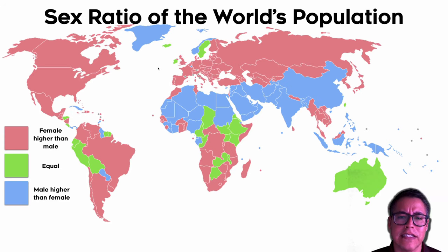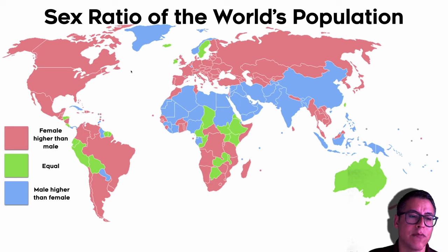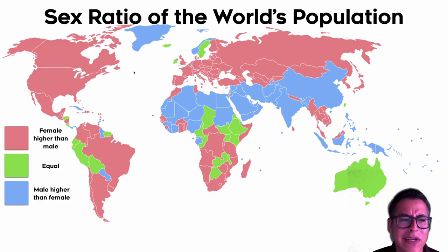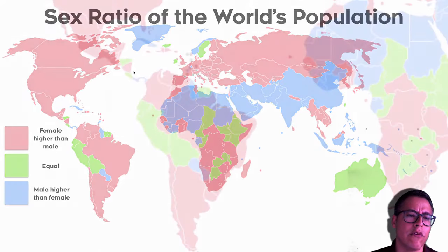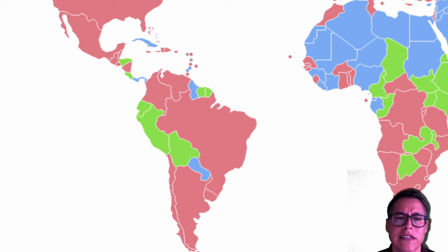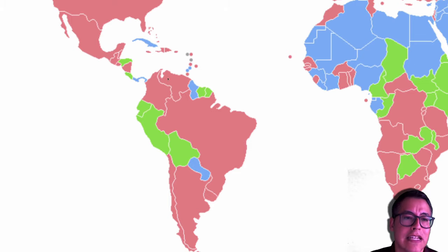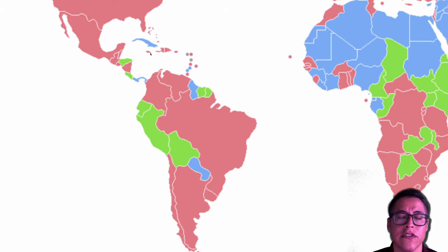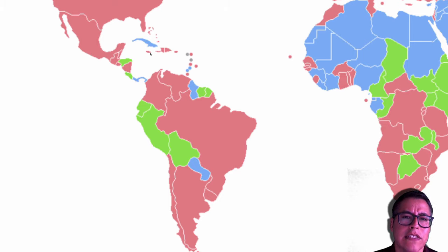When we look at the world this way, it tells a certain story. For instance, in the Western Hemisphere, the ratio of females is higher than males on average. But that's an incomplete story at the regional scale. If we zoom into the Caribbean and Central and South America, it tells a different story — it's not as uniform as we thought. In Central America, the ratios are either equal or there are more males than females.